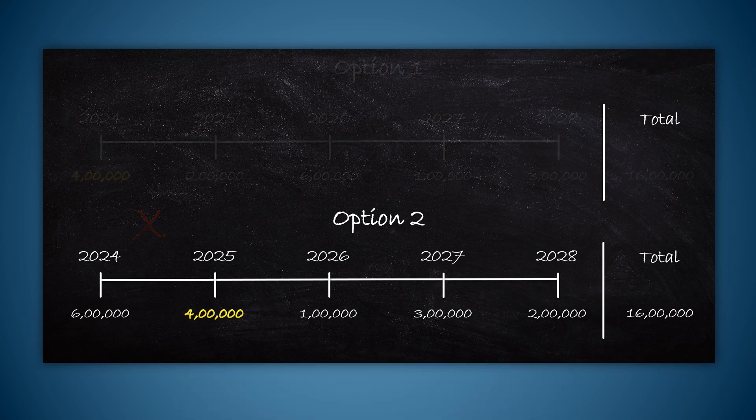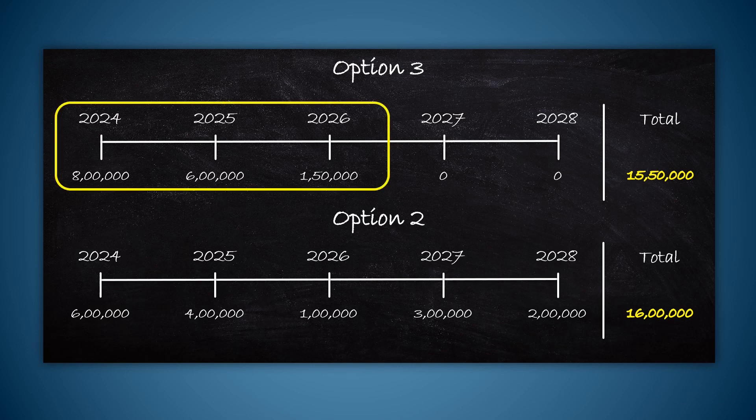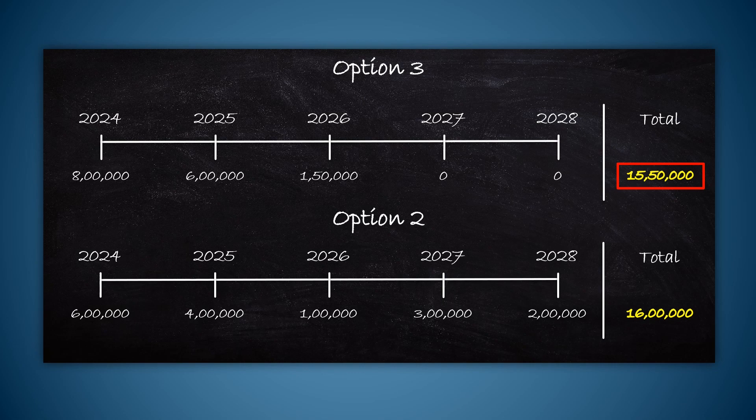Under option 3, you will get only 15.5 lakhs in total, but you get all your money by 2026 itself. If you look at only the total, you will think this is the worst option because the amount is 50,000 less, but that could be wrong and we need to calculate to find that out.